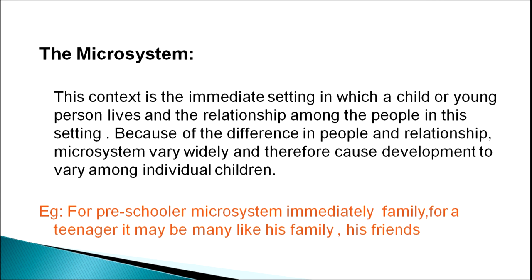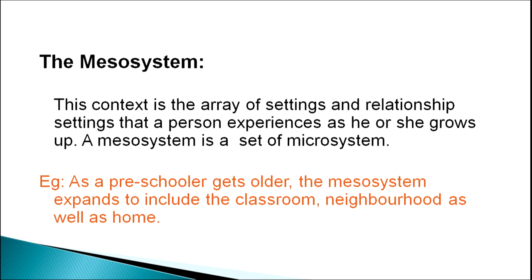The microsystem is the immediate setting in which the child or young person lives and the relationships among the people in that setting. Because of differences in people and relationships, microsystems vary widely and therefore cause development to vary among individual children. For example, for a preschooler the microsystem may just include his immediate family, but for a teenager the microsystem may include his family, his friends, his teachers and others.